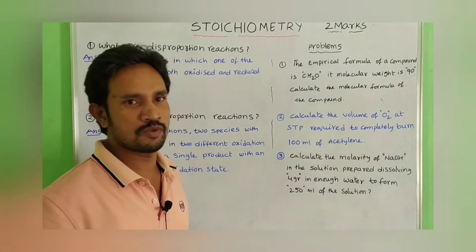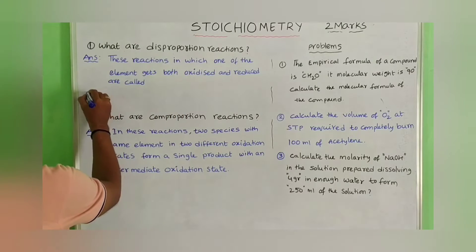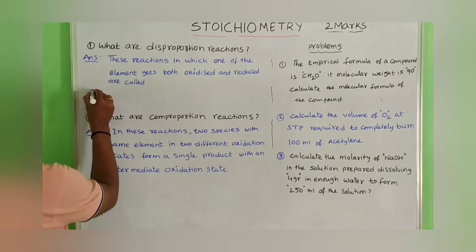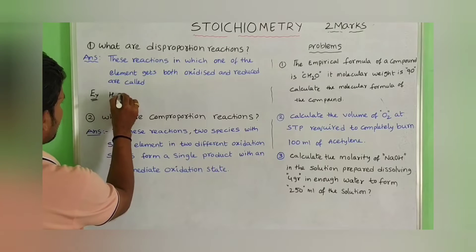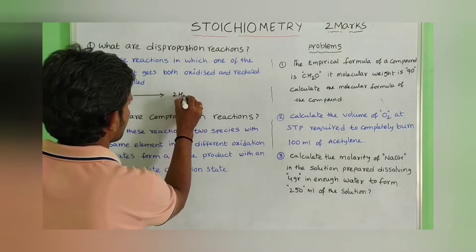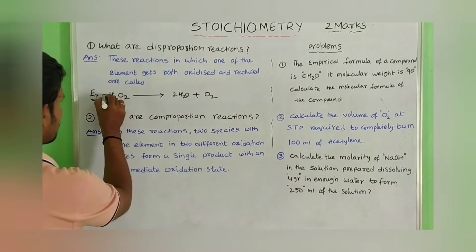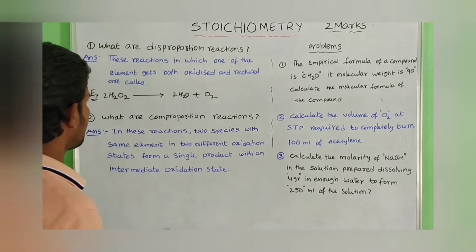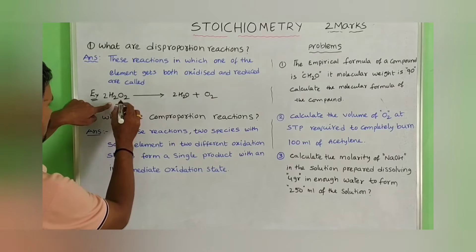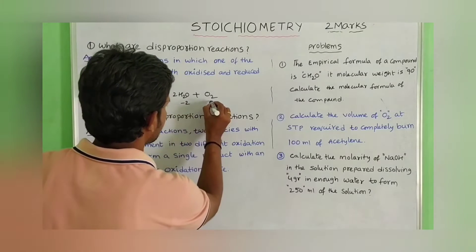These are disproportionate reactions. Disproportionate reaction means — for example, H2O2 gives rise to H2O plus O2. In this reaction, the oxidation state of oxygen is minus 1 in peroxides, minus 2 in normal oxides, and 0 in elementary form.